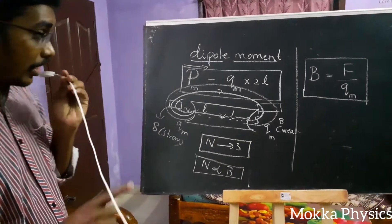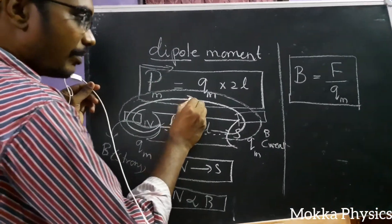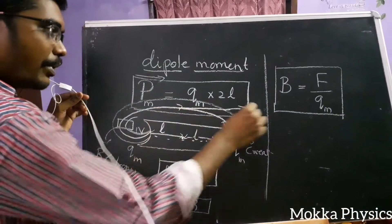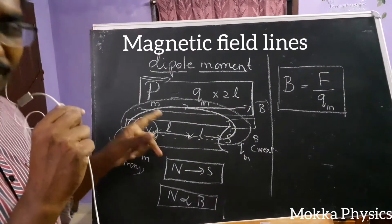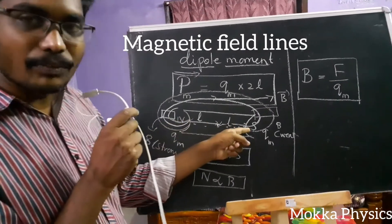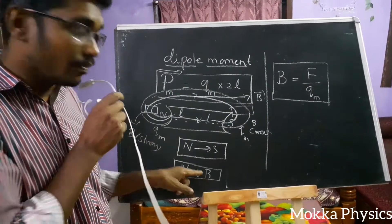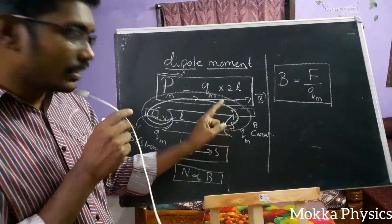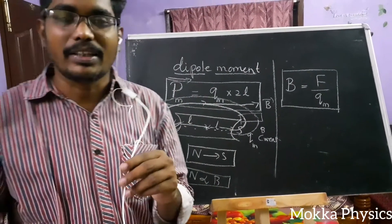These are the four properties of magnetic field lines. First: field lines start from the North Pole and end at the South Pole. Second: they never intersect. Third: the degree of closeness gives the strength of the magnetic field — if they are close, the field is strong; if they are far apart, the field is weak. Fourth: a tangent drawn at any point gives the direction of the magnetic field.